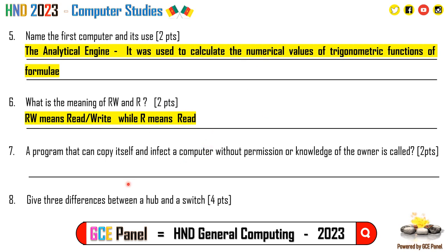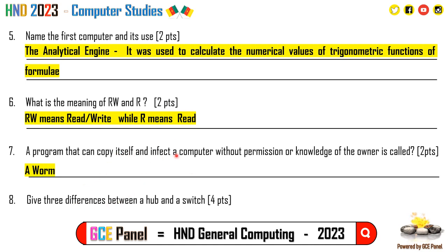Section B, Question 7: A program that can copy itself and infect a computer without the permission or knowledge of the owner is called a worm. A worm can replicate or copy itself — unlike a virus, which cannot replicate itself.